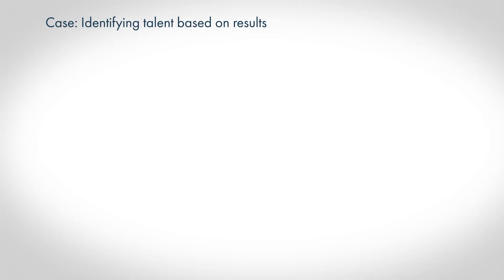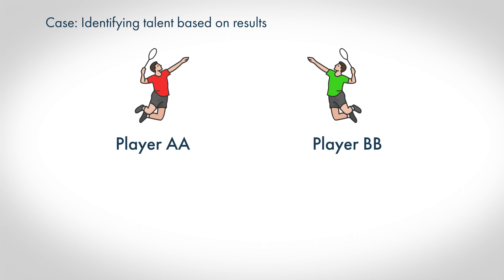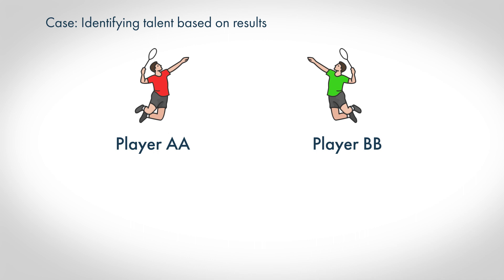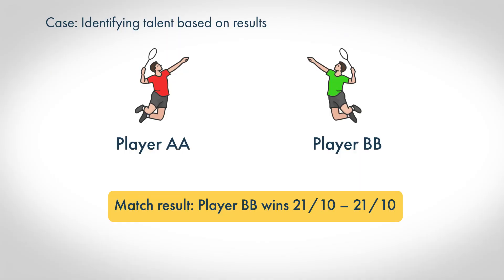Before we get into the area, I would like to introduce a case — a normal situation when we enter a hall. We often go to check out the results of a match. If we have player AA playing against player BB, the result could be that player B wins 21-10. Based on this result alone, we would say player B is the best player. But the question is: is player B also the most talented player? That's what talent identification is all about — we need to dig deeper into understanding why players are performing.